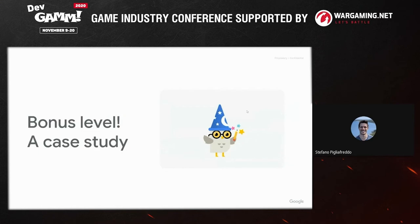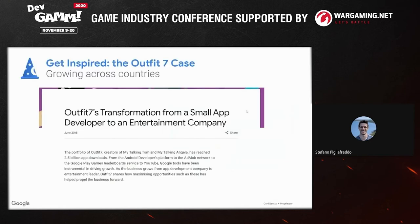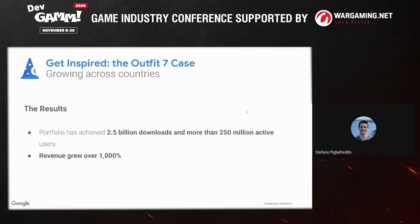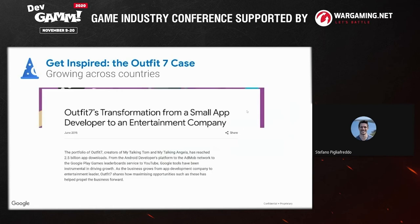Now to the bonus level — I wanted to include a small case study for inspiration. This is the Outfit 7 case, their transformation from a small app developer to an entertainment company. They set out on a quest to drive downloads of new products in new markets, monetize the app, stimulate revenue growth, and encourage engagement with new and existing products. They achieved remarkable results: 2.5 billion downloads and more than 250 million active users, with revenue growth of over 1,000%. You can read about it on Think with Google — just search 'Outfit 7 transformation small app developer.'